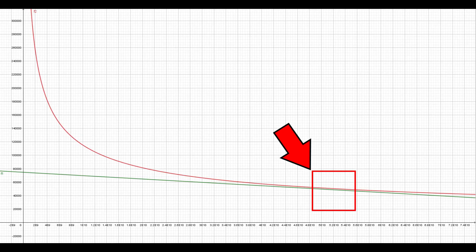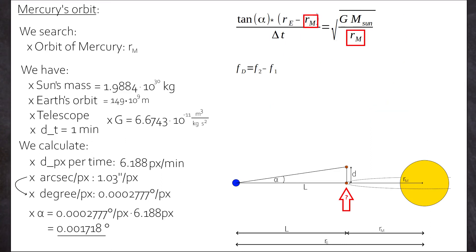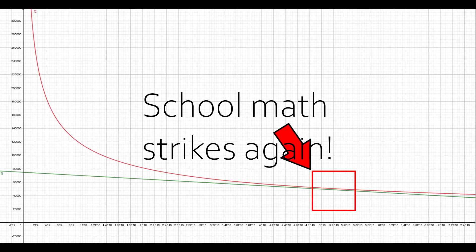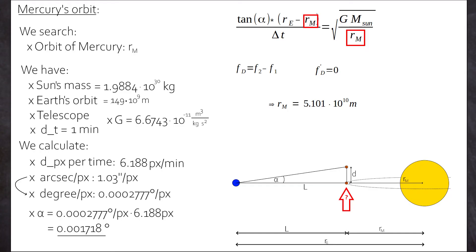We estimate. What is the closest these two functions will get? For getting the answer, we calculate the distance function, say f distance equals f2 minus f1. And by calculating the derivative of fd and setting that to zero, yes, school math strikes again. We calculate the radius rm where the speeds are closest. And that value turns out to be 5.101 times 10 to the power of 10 meters.